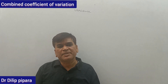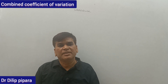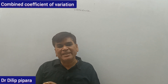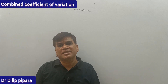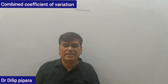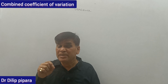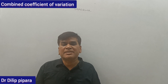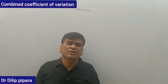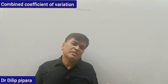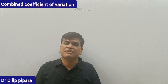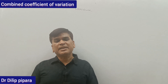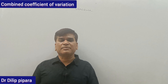Once again, in the last video from the chapter of dispersion, we discussed how to calculate coefficient of variation. We covered two or three examples of the coefficient of variation. It was clear that when the percentage value of the coefficient of variation is high, there is more variation in the series. When the percentage is low, that series has more consistency. In today's video, we will discuss the coefficient of variation in the case of combined arithmetic mean and combined standard deviation.